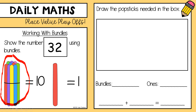Once you've drawn that, I would like you to write the number sentence. We know that our whole number today is 32 — so what plus what makes 32? What two parts make 32? You can pause the video now, draw your bundling sticks, your groups of 10 and your ones, and then write your number sentence. Pause the video because I'm going to go to the next slide and show you the answer.